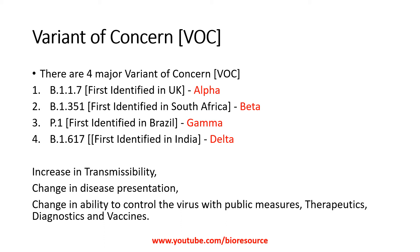There are four major Variants of Concern: B.1.1.7, first identified in the UK; B.1.351, first identified in South Africa; P.1, identified in Brazil; and B.1.617.2, first identified in India. The earlier naming was based on country of origin, but these are now renamed Alpha, Beta, Gamma, and Delta respectively.